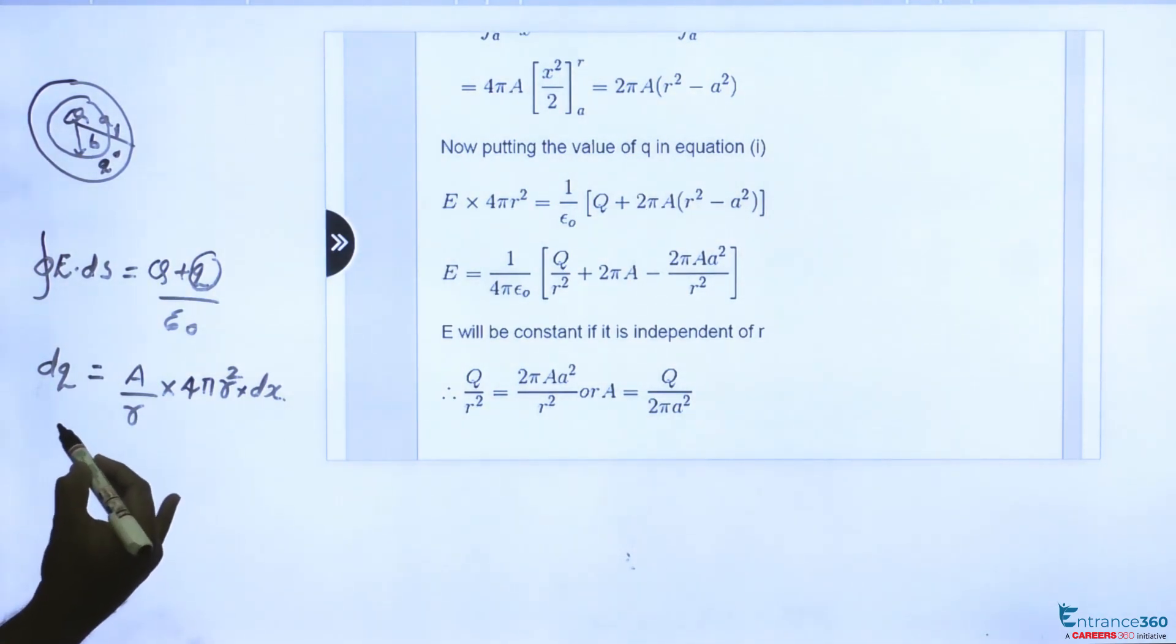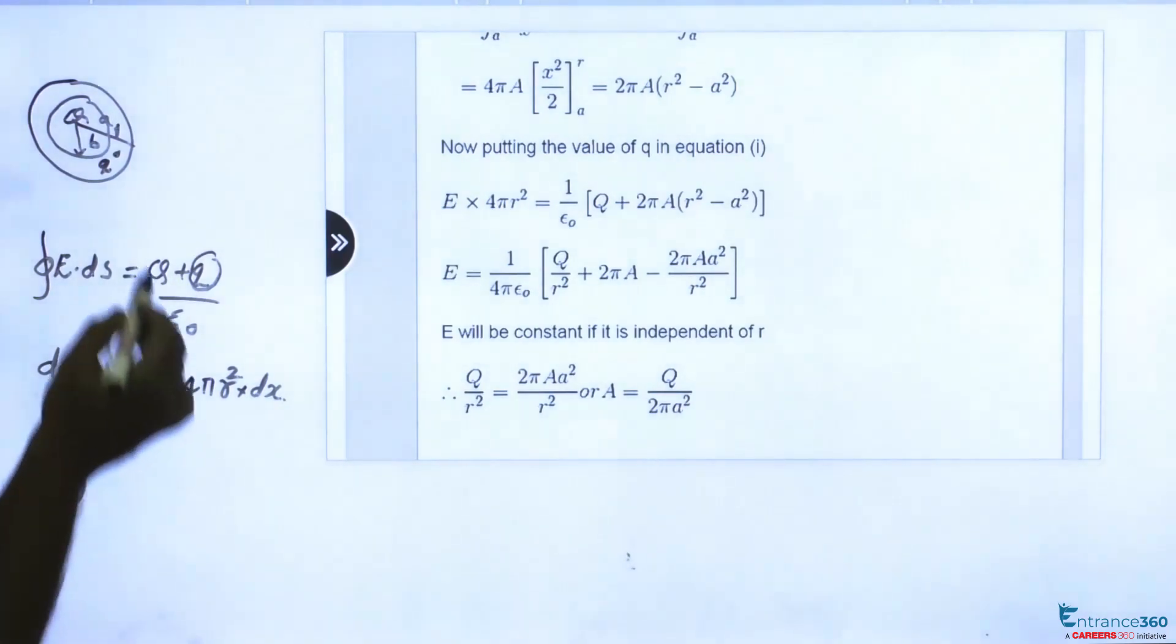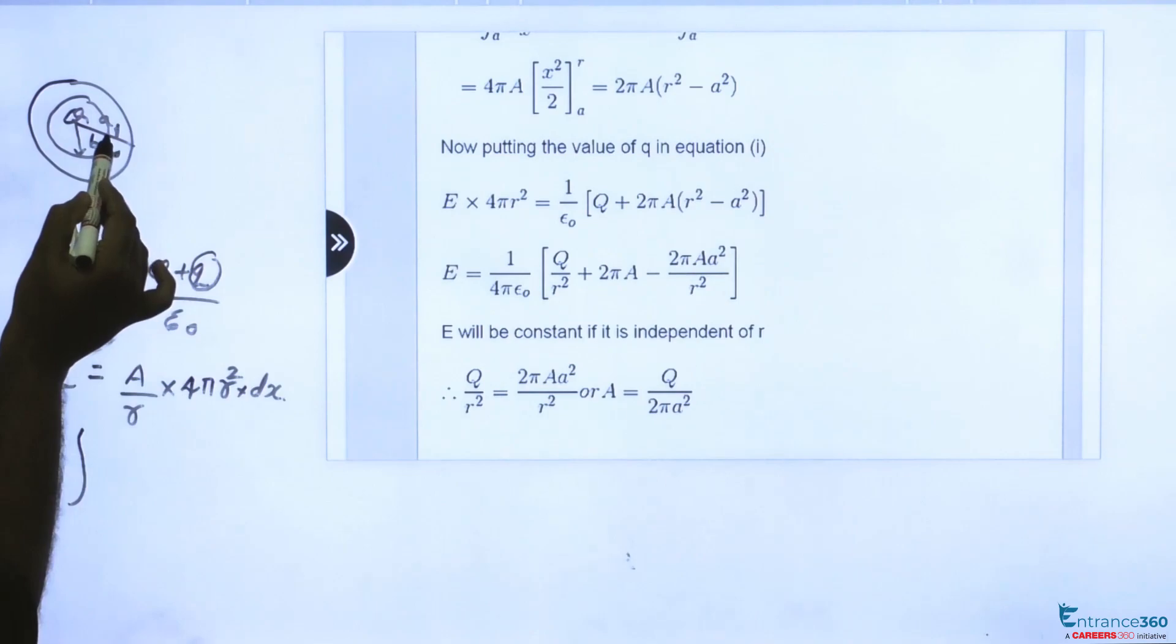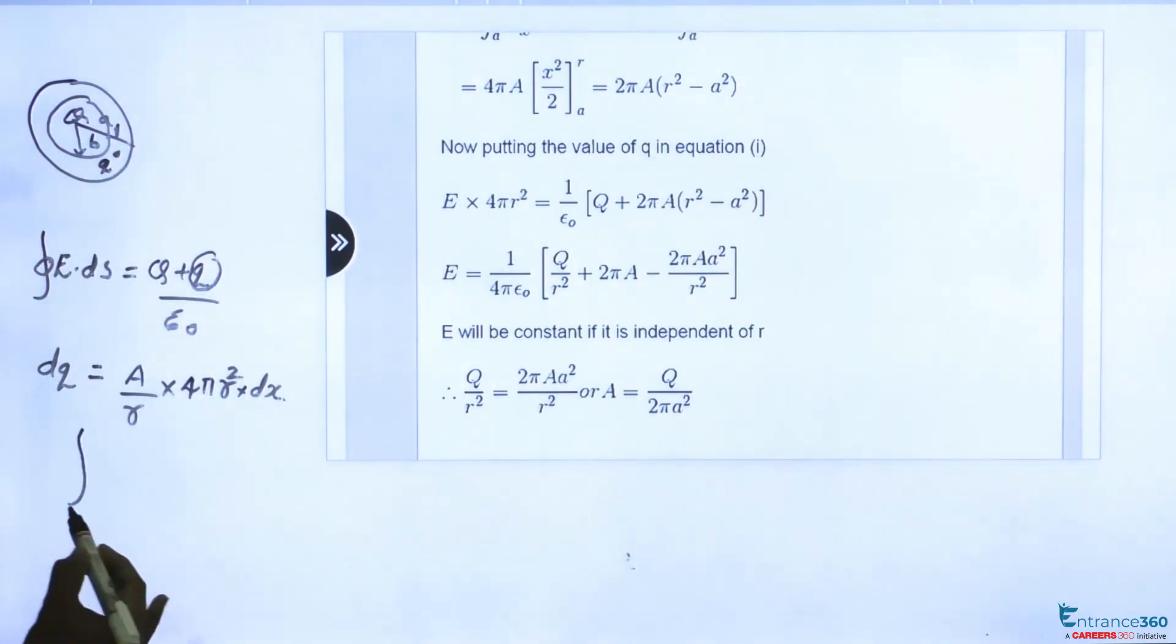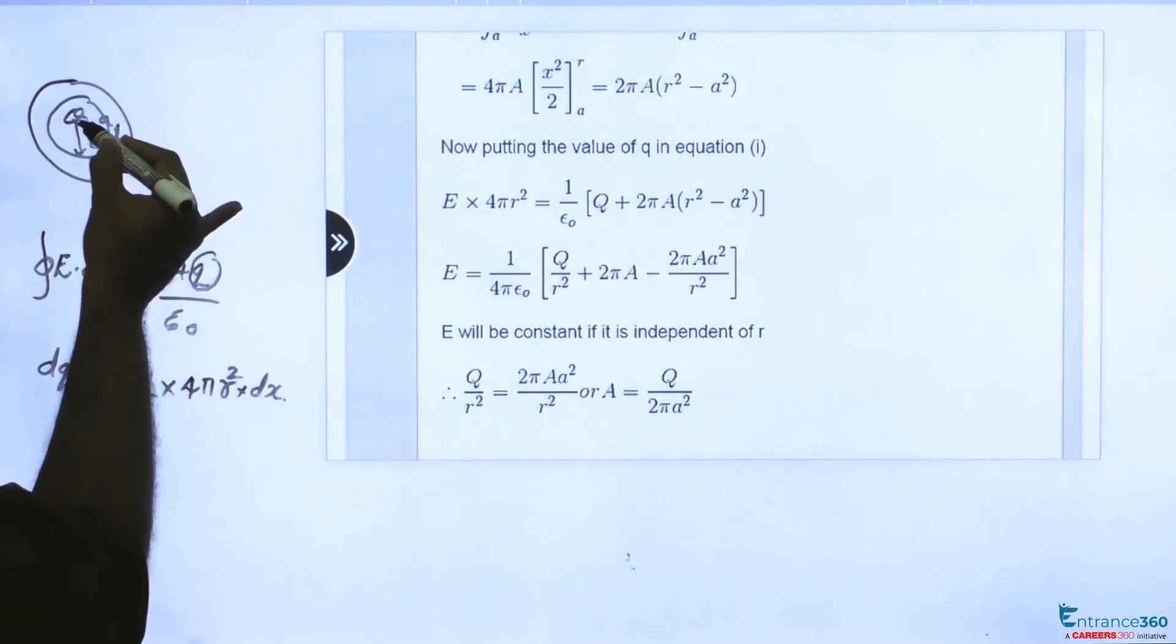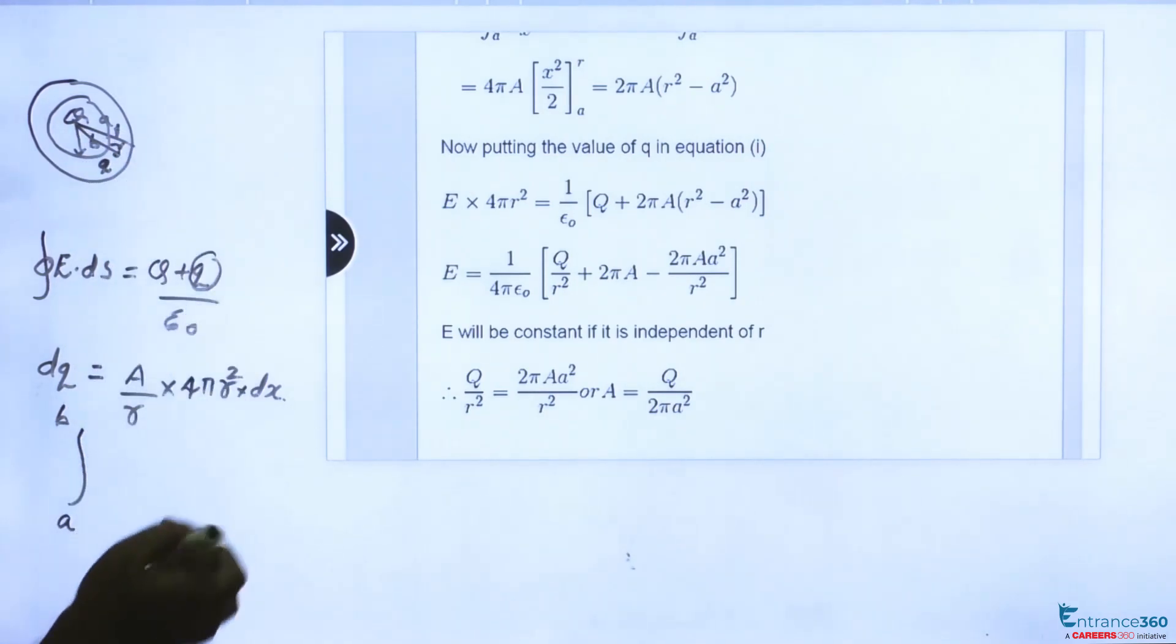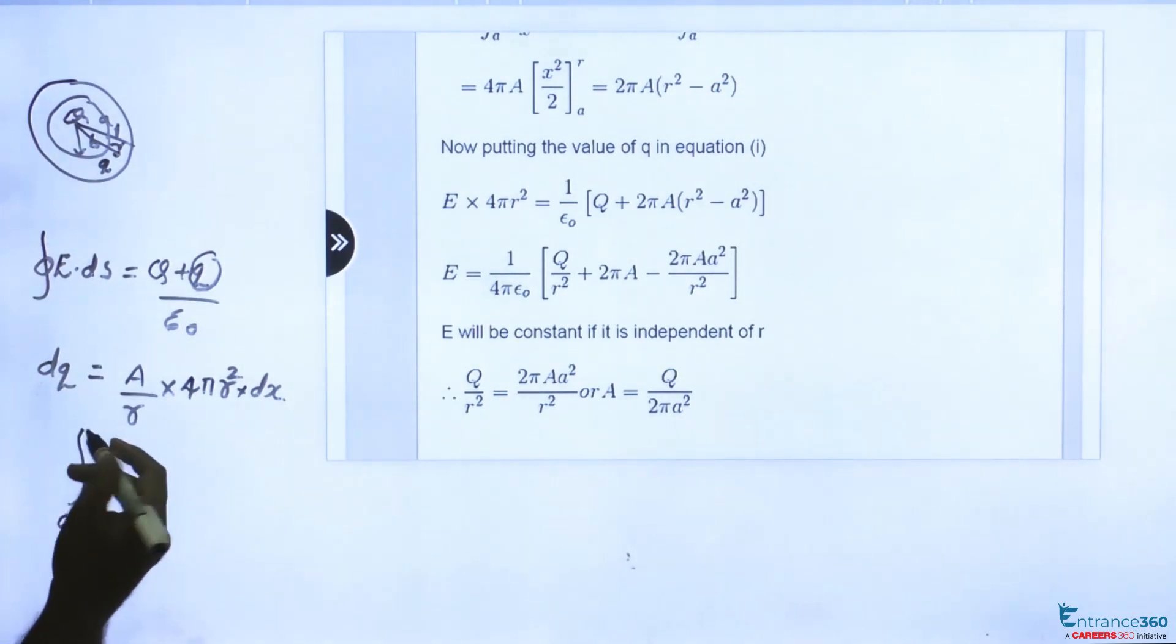Now, net charge will be, net charge between this A and B will be from A to B. Or we are considering the charge at a distance, say R, small r. Then net charge will be A to R.